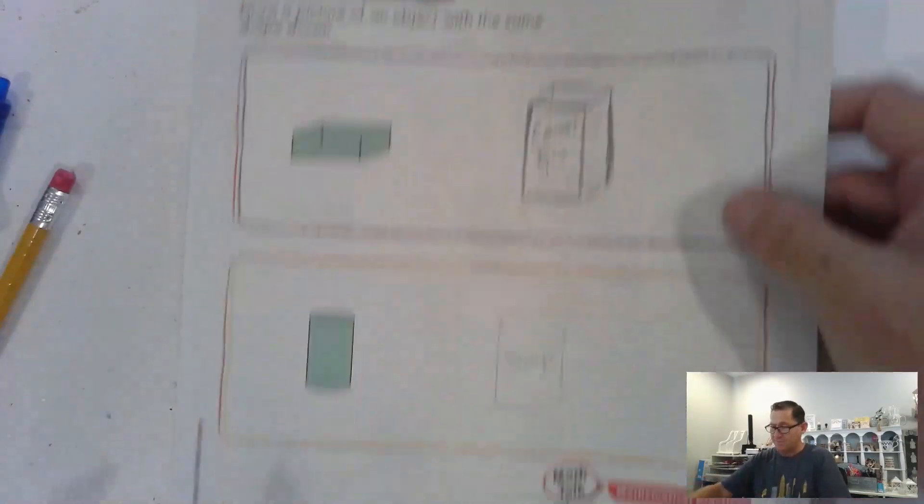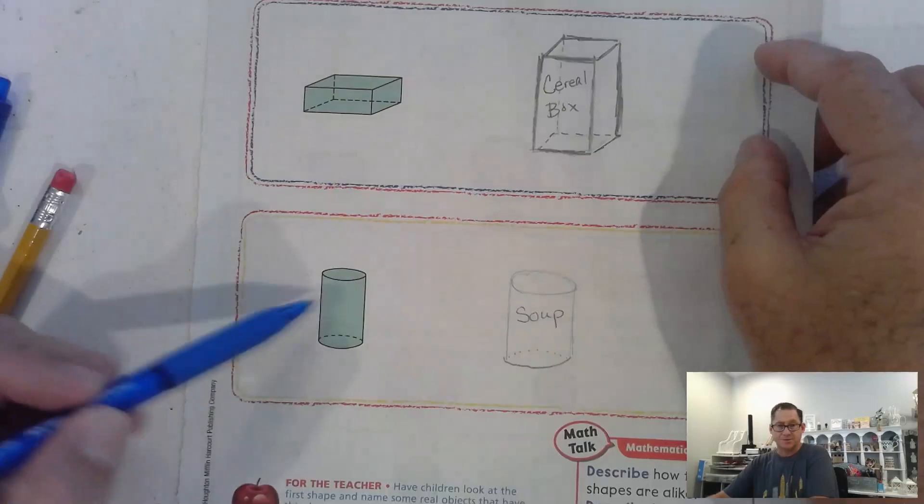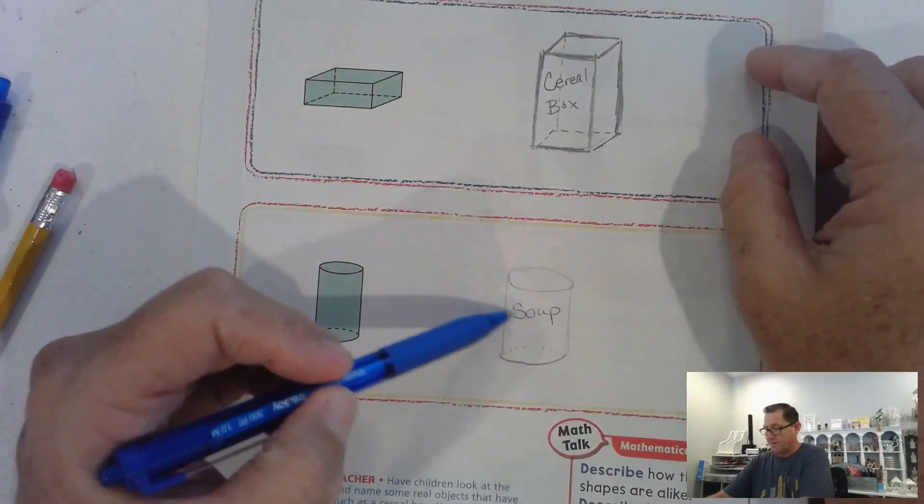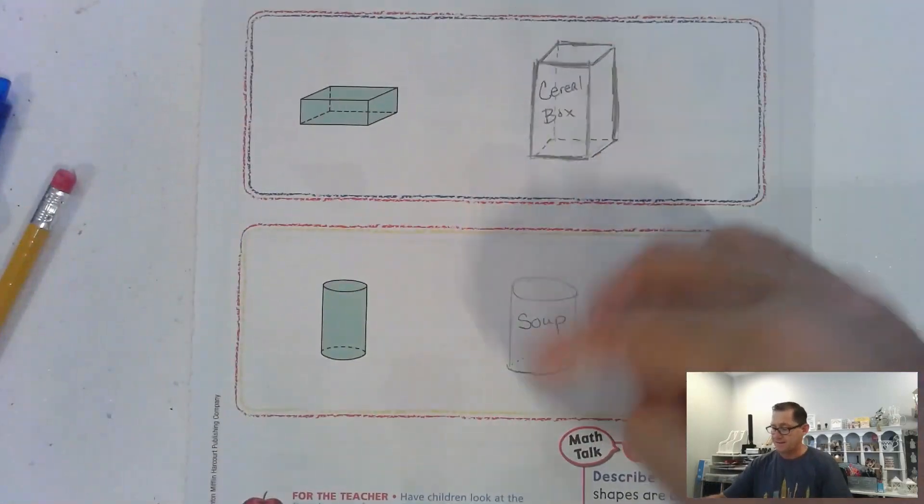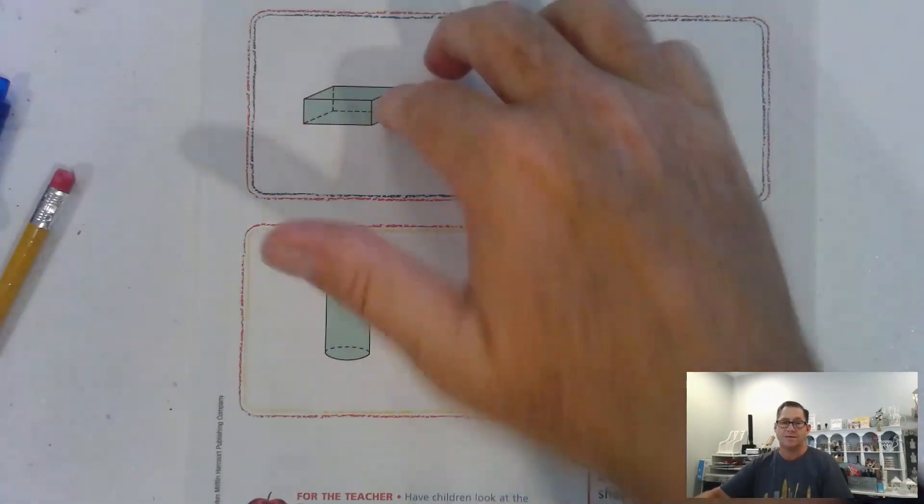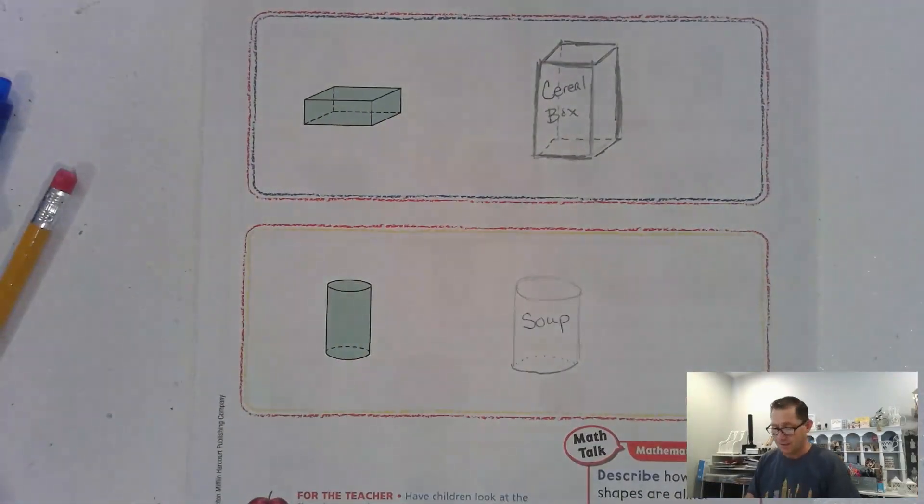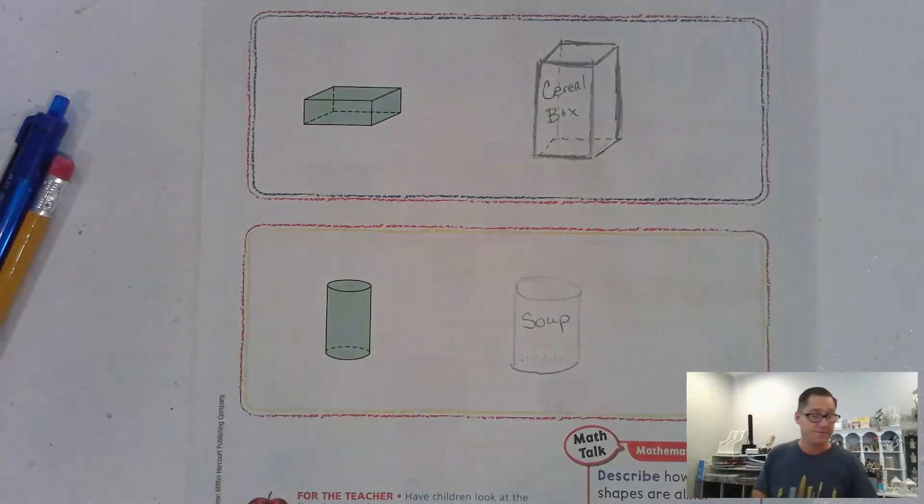And then the second shape is a cylinder. And so that reminded me of a soup can. So you draw something that represents both of those three-dimensional shapes in real life. Alright.